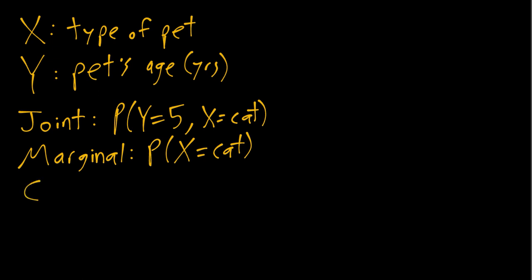And then the most complicated one is this conditional probability, where we could ask things like given that the pet is a cat, or among cats, or conditional on X equals cat, what is the probability of being five years old?